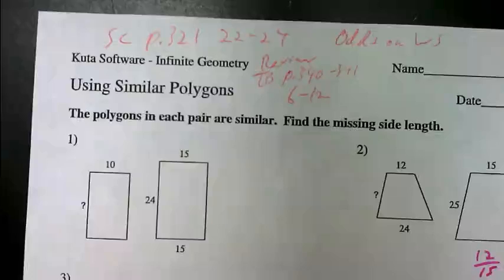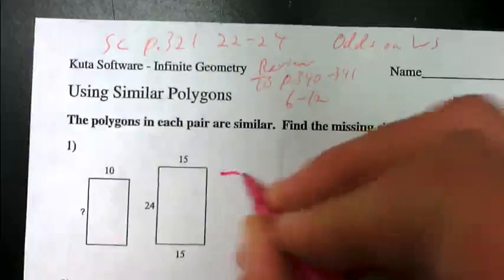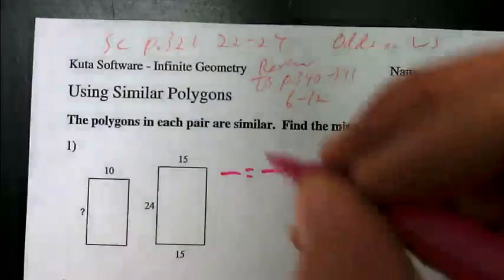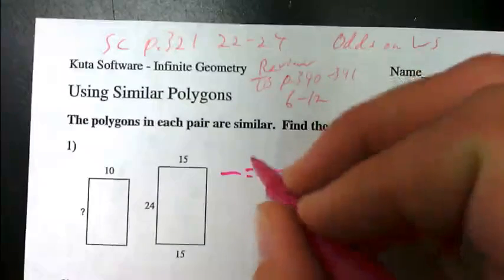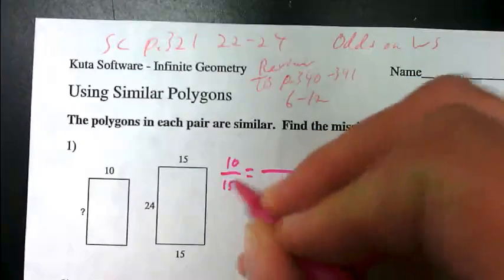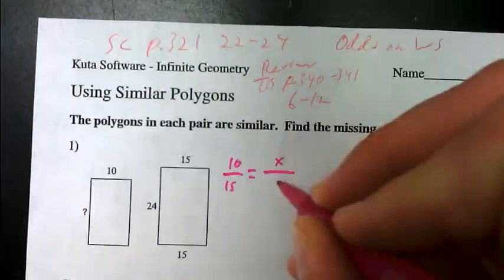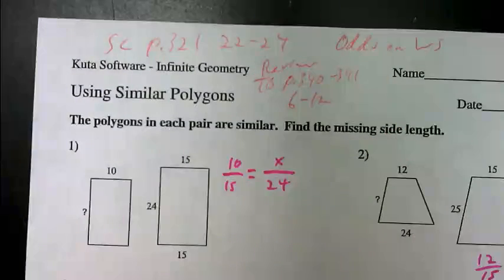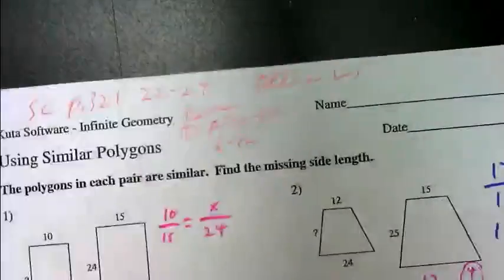So, on this one, just take two sides, match them up. Take the other two sides, match them up. Instead of a proportion. So, again, this is just an example of one proportion that would work. This isn't the only one that would work. So, let's say I do 10 to 15, and x to 24. That's one proportion you could use to solve.